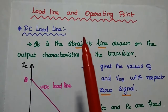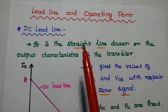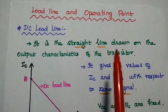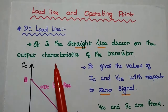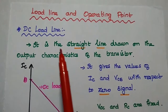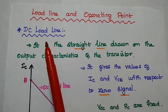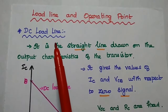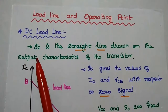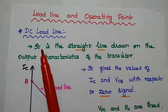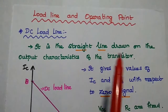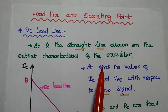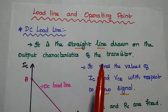We are going to discuss load line and operating point of the transistor in detail. Let's start with DC load line. Here, load represents the output side of the transistor circuit. The load line is the straight line drawn on the output characteristics of the transistor.